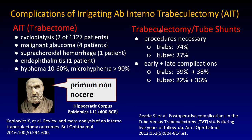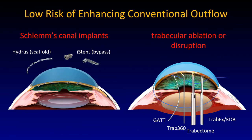Looking at the TVT study — trabeculectomy versus tube study — trabeculectomy had a lot of early interventions necessary and considerably more early complications. That is the take-home from the primary TVT study. A newer study looks slightly more favorable for trabeculectomy, but there is no denying there is a lot of hands-on management required.